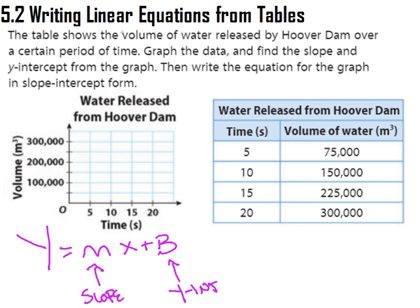So here we have a table. The table shows the volume of water released by Hoover Dam over a certain period of time. Graph the data and find the slope and y-intercept of the graph. If we look here, we have my x is normally almost always on the left, and my output or my y is always on the right.